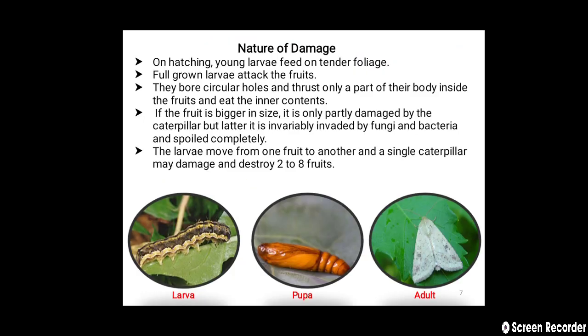Nature of damage: on hatching, young larvae feed on tender foliage. Full-grown larvae attack fruits, bore circular holes, and thrust only part of their body inside the fruit to eat the inner contents. If the fruit is bigger, it is only partly damaged, but later invariably invaded by fungi and bacteria and spoiled completely. A single caterpillar may damage two to eight fruits.